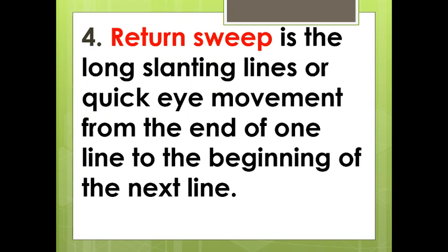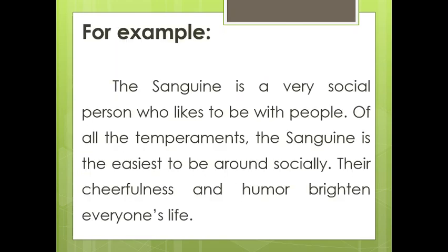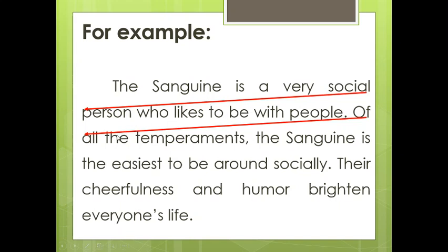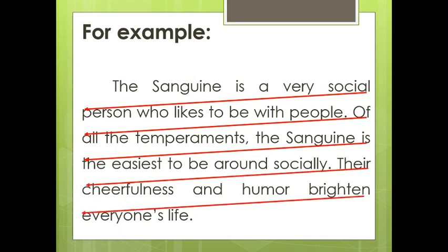Fourth, return sweep is the long slanting movement or quick eye movement from the end of one line to the beginning of the next line. For example: 'The sanguine is a very social person.' Return sweep means your eyes move from the end of the first line down to the beginning of the next line. So when you end the first line, your eyes move to the beginning of the next line — that is what we call return sweep.